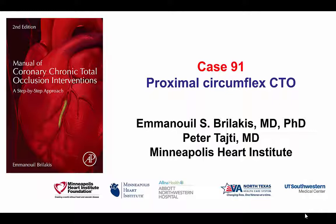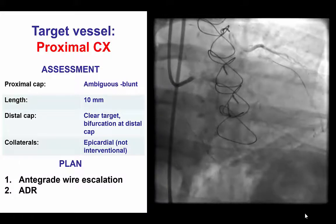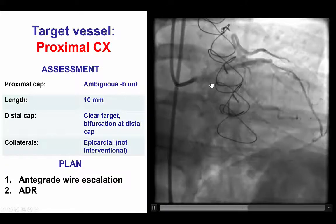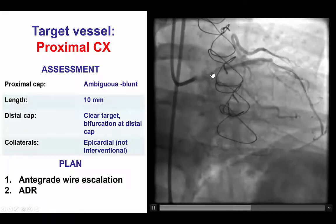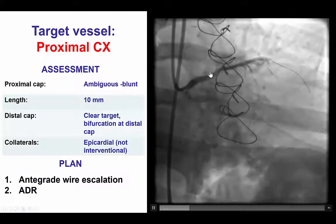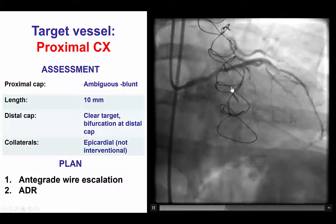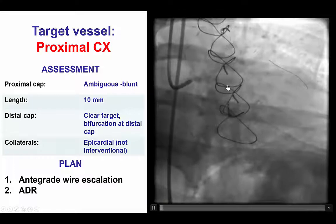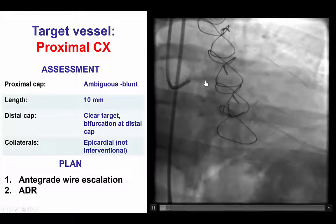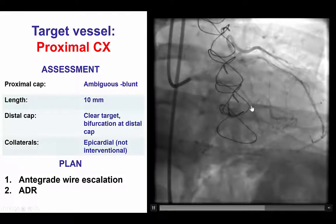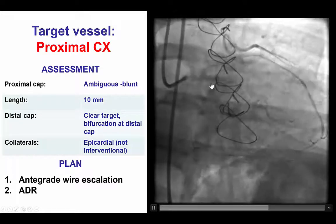This is a case of a proximal circumflex CTO. The patient had previous coronary bypass graft surgery and was referred for PCI of an ostial circumflex CTO. There was an ambiguous proximal cap with smooth continuation of the vessel past the origin of the circumflex. However, the circumflex itself was a large, good quality vessel and the occlusion was short, approximately 10 mm. There was a bifurcation at the distal cap between the first OM, which is the larger branch, and the distal circumflex.